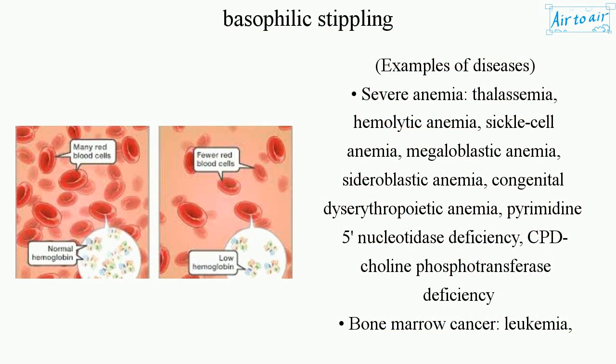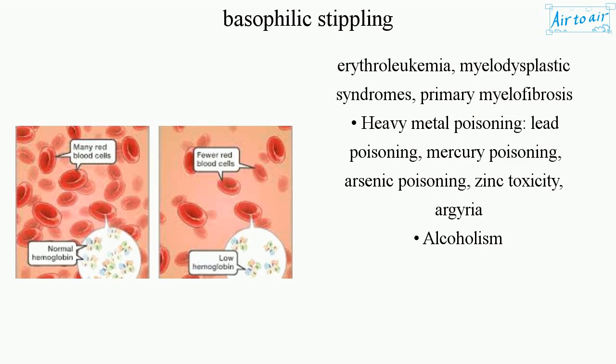Examples of diseases associated with basophilic stippling include: severe anemia, thalassemia, hemolytic anemia, sickle cell anemia, megaloblastic anemia, sideroblastic anemia, congenital dyserythropoietic anemia, pyrimidine 5'-nucleotidase deficiency, CDP-choline phosphotransferase deficiency, bone marrow cancers such as leukemia, erythroleukemia, myelodysplastic syndromes, and primary myelofibrosis.